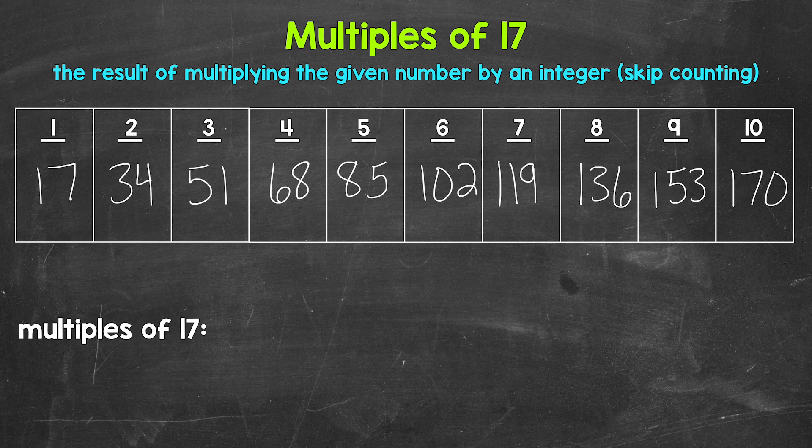Now let's write these multiples in a list below. And you'll notice we're just counting up by 17. Like I mentioned earlier, another way to think of multiples is to skip count. So we start with 17, then we have 34, 51,